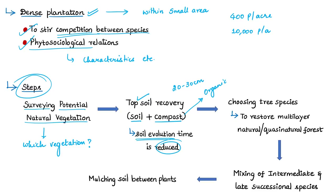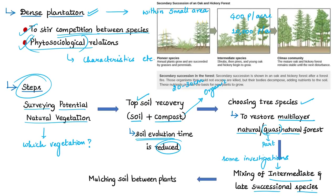Tree species must be chosen from the forest communities of the region in order to restore multi-layer natural, quasi-natural, or part-natural forests. For a correct choice of trees based on reconstructing the potential natural vegetation, phytosociological investigations are required, along with detection of soil profile, topography, and proper land utilization. After field surveys are complete, all intermediate and late successional species of plants — belonging to the ecological succession from pioneer species to climax community — are mixed and densely planted.